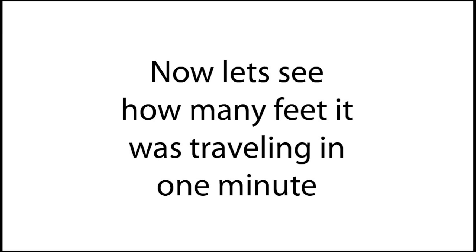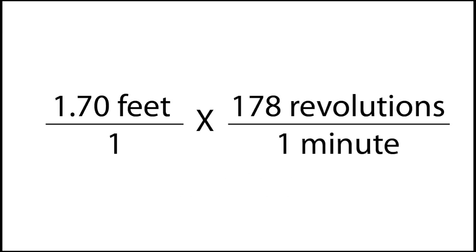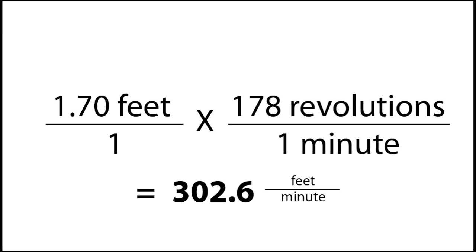Now let's figure out how many feet it was traveling in one minute. We have 1.70 feet per revolution, and we're going to multiply that times 178 revolutions over 1 — the number of revolutions we counted in our one-minute window. Everything is over 1, so our answer is 302.6 feet per minute. That's how far our anemometer was traveling.